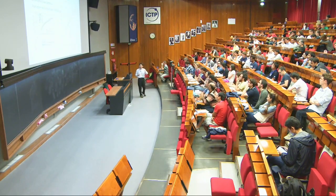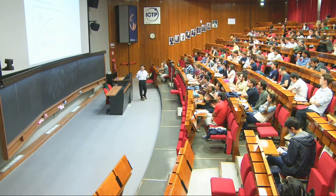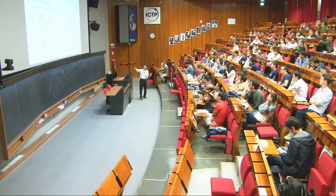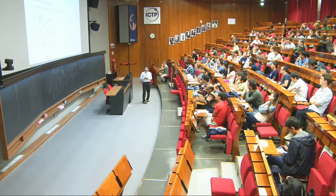The nonlinear effect is very important for weak lensing and redshift-space distortions. Looking at the convergence power spectrum — which determines the measurement of galaxy shapes — the dotted line is from simulations and the solid line is the prediction from linear theory. On large scales (small l), linear theory is fine, but there is a large enhancement from nonlinearity at small scales. If you use linear theory, you get a completely wrong answer at small l.